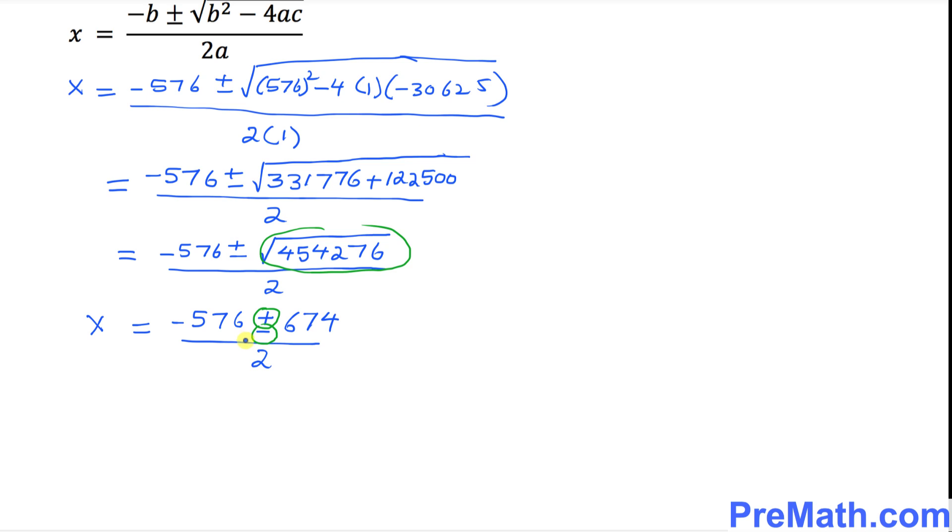I'm going to put this one as negative 576. First, I'm going to pick the plus sign 674 divided by 2. And the other side, negative 576 minus 674 divided by 2.